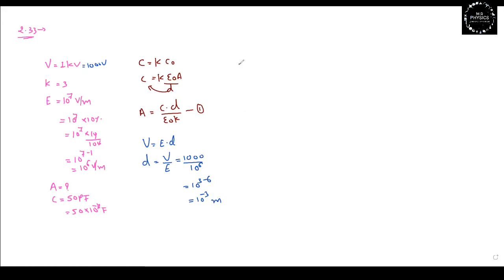Now substituting into the equation, A = CD/(Kε₀), where C = 50 × 10^-2, D = 10^-3, ε₀ = 8.85 × 10^-12, and K = 3.